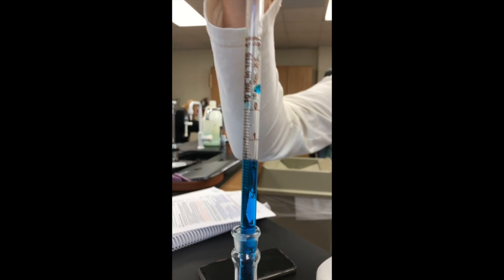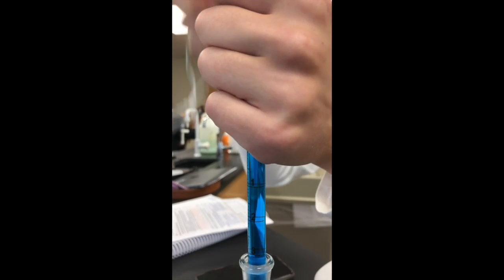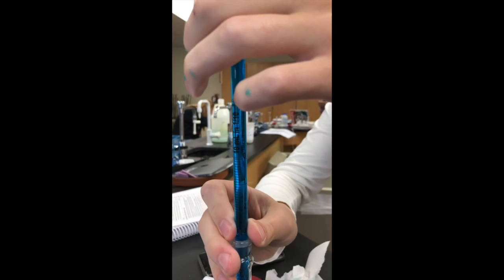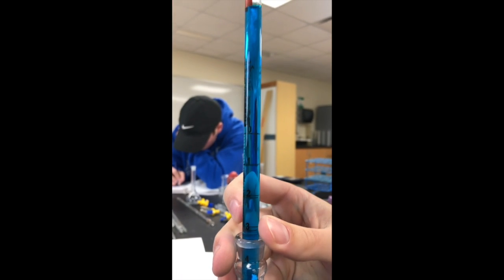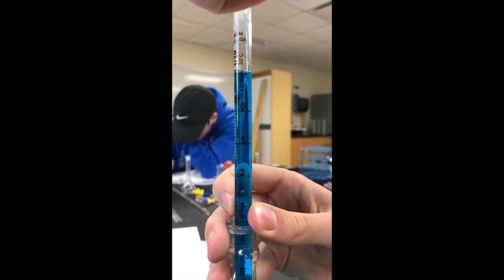As you can see here, my lab partner Garrett is using a Mohr pipette to withdraw some blue food coloring solution from a volumetric flask. He first wants to fill it up past the zero milliliter mark and then slowly move the meniscus down to the zero.